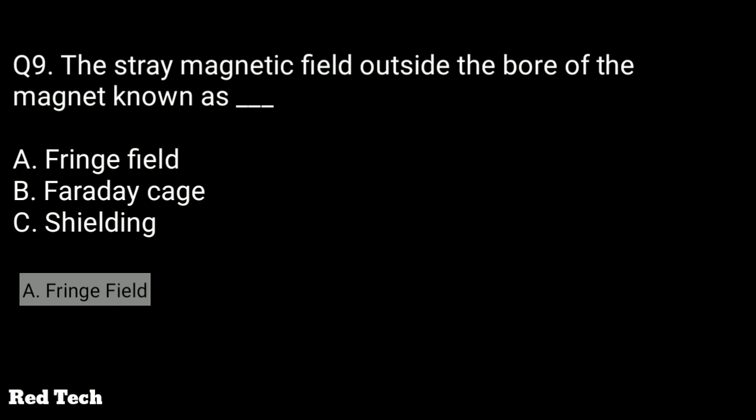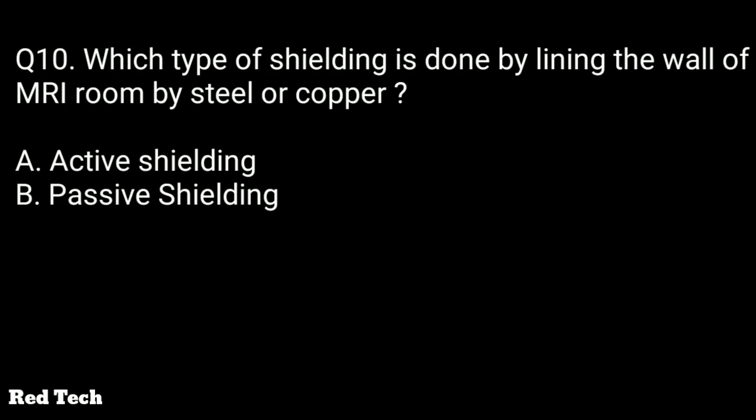Question number ten: which type of shielding is done by lining the walls of the MRI room with steel or copper? The options are active shielding or passive shielding. The right answer is passive shielding. The chamber where this shielding is done is called the Faraday cage.